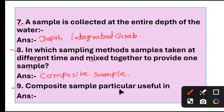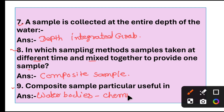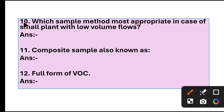Question 9: Composite samples are particularly useful in water bodies that have a lot of chemical variability. Question 10: Which sampling method is most appropriate in the case of a small plant with low volume flows? Answer: Grab sampling method.